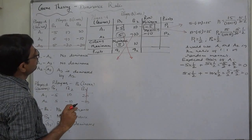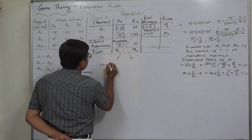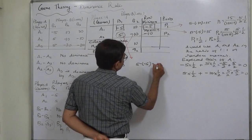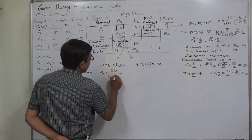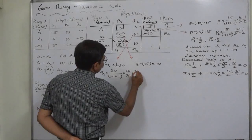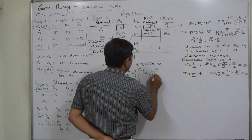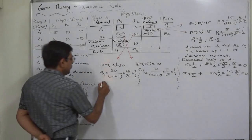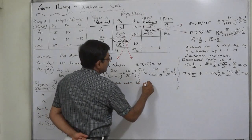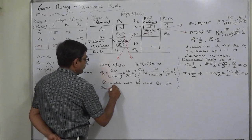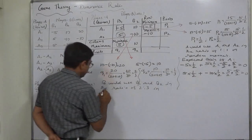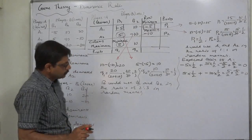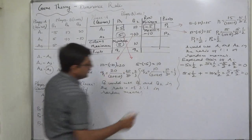Now for player B: 10 minus (minus 10) equals 20, and 5 minus (minus 5) equals 10. So Q1 equals 20 divided by (20 plus 10), which is 20 by 30, equal to 2 by 3. Q2 equals 10 divided by 30, which is 1 by 3. That means B would use B1 and B2 in the ratio of 2 to 1 — that is, 2/3 and 1/3 — in a random manner in the long run.